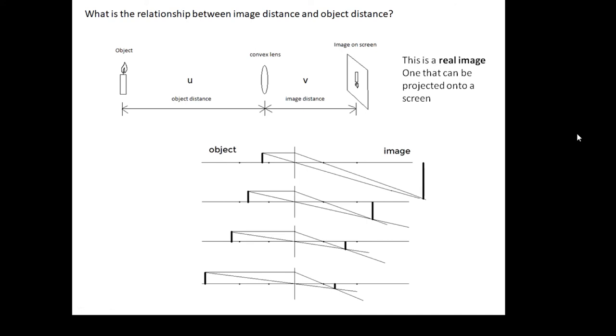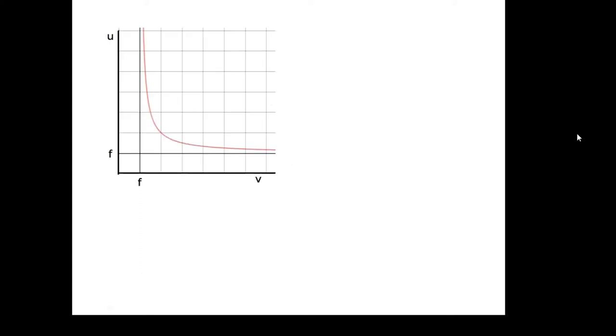In the experiment, what we do is we change the object distance and we see where—we move the screen until you get a focused image. Interesting to note that what's going on in the first of these four diagrams is what happens in a projector—we get a big image. And then at the bottom there, that's what happens in a camera—you get a small image on the film or the CCD. If you plot u against v, this is the graph that you get. It's a kind of inverse graph but not quite, and you can see where the values of f are off this graph.